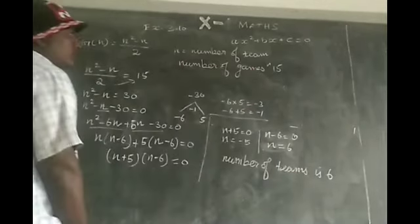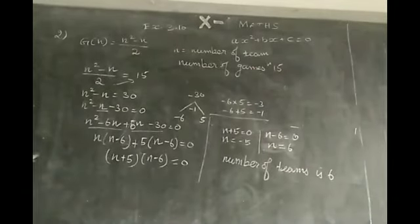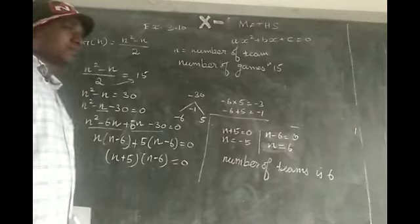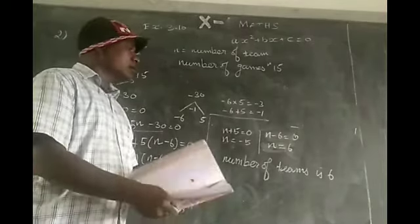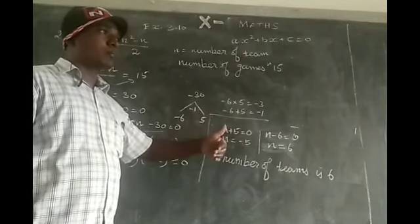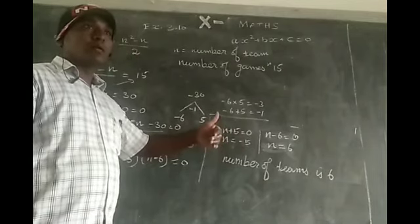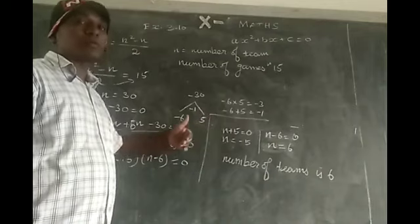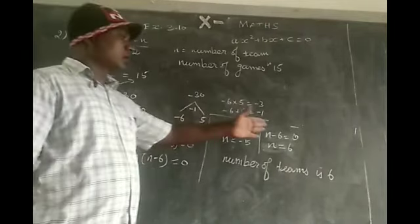Since number of teams can be 6 teams, why minus 5 is negative? Counting is negative. If the teams is minus 5, we can reject. So n is positive, 6.